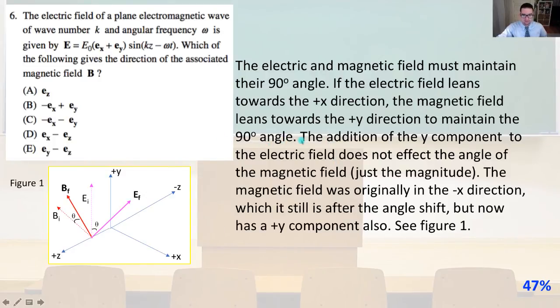So this was our initial magnetic field leaning towards the positive Y direction. So again, it's going to maintain this 90 degree angle. So the addition of the Y component to the electric field, it does not affect the angle of the magnetic field, just the magnitude. The magnetic field was originally in the minus X direction. It is still in the minus X direction after the angle shift, but now it also has a positive Y component as you can see right here. So the answer with a negative X component and positive Y component is answer B.